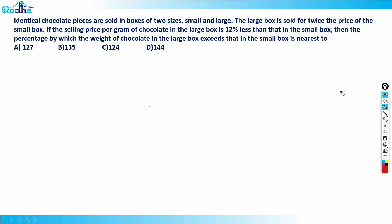Let's look at another question from CAT 2021 Slot 1, from the percentage and profit-loss chapter. Identical chocolate pieces are sold in boxes of two sizes: small and large. The large box is sold for twice the price of the small box. If the selling price per gram of chocolate in the large box is 12% less than that in the small box, then the percentage by which the weight of chocolate in the large box exceeds that in the small box is nearest to which value?